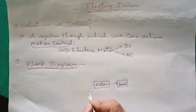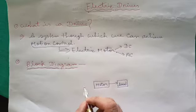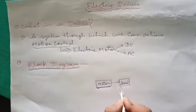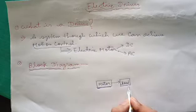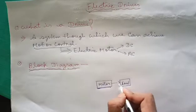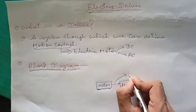Now we will understand the working of an electric drive with the help of a block diagram. Suppose we have a motor which is driving a load. And between the motor and the load there will be some transmission mechanism.